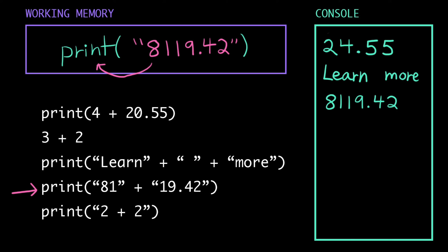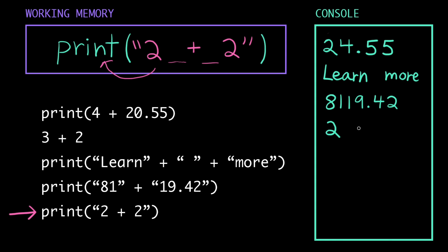The computer loads the last line of the program into working memory. Notice that this whole thing inside the parentheses here is surrounded by quotation marks. That means this is already a single value. It's the string the 2 character, space character, plus character, space character, 2 character. It's not the expression the integer 2 plus 2. Because we already have a single value, there's nothing to simplify here. So the computer pops out of the parentheses, sees the instruction print, prints 2 space plus space 2 to the console, and clears working memory.